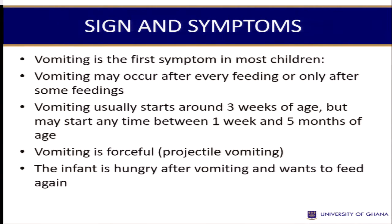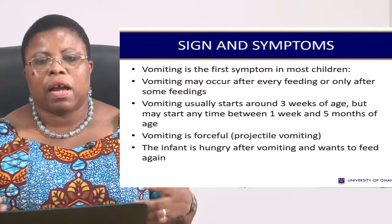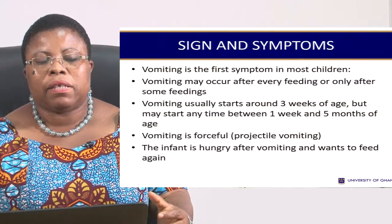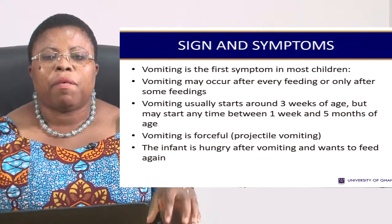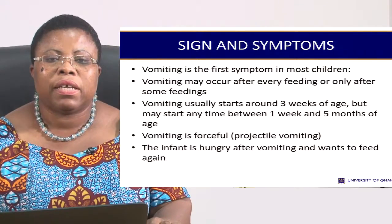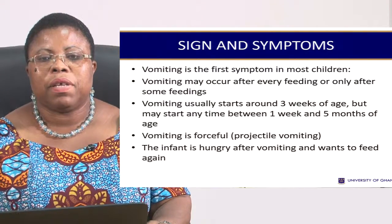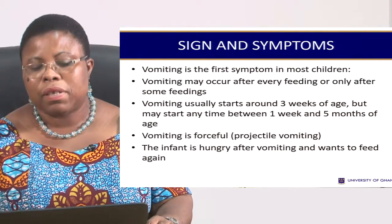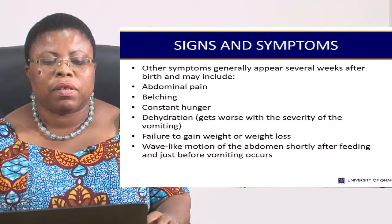The child is crying a lot and vomiting with forceful projection. The child always appears hungry. Remember that when you eat, food doesn't enter the blood directly from the stomach. It has to be digested and the end products of digestion are absorbed into the blood. So even though the child is eating, the cells are not receiving nutrients — that is why the child is always hungry.